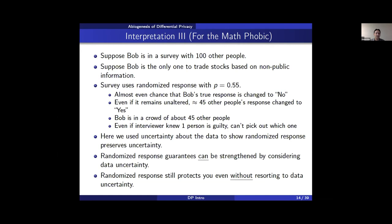In this interpretation we used uncertainty about the data combined with additional randomness in randomized response. But in the previous Bayesian and frequentist interpretations, the bounds worked for any prior the attacker might have — only depending on the randomization in the spinner. You can strengthen the guarantees by considering attacker priors, but you don't need to, because the randomness in the spinner is strong enough by itself to protect you.